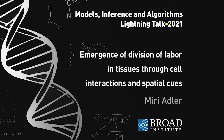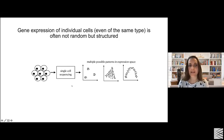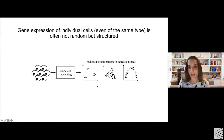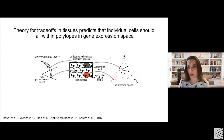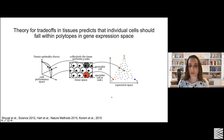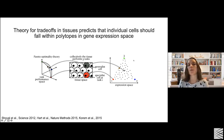Today I will talk about the emergence of teaching division of labor through cell interaction and spatial cues. When we think of single-cell gene expression data, we often see that cells form certain patterns in gene expression space, including a continuum of expression even for cells of the same type. But the origin of such patterns is usually unclear. One theory that addresses this is the Pareto optimality theory, developed by Uri Alon's lab at the Weizmann Institute. In this theory, we think of cells as multitaskers that need to perform multiple tasks with a trade-off: performing one task better comes at the expense of other tasks.